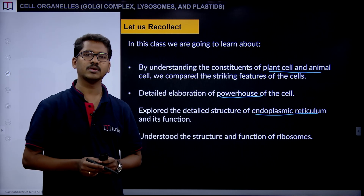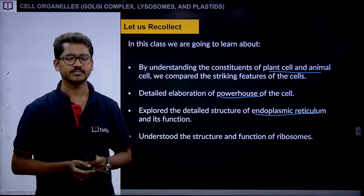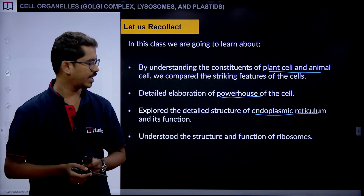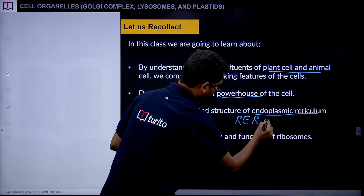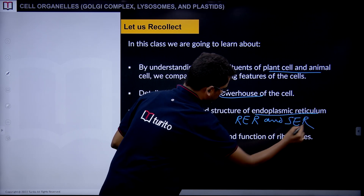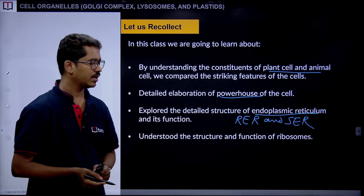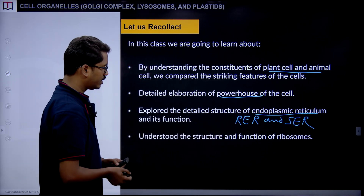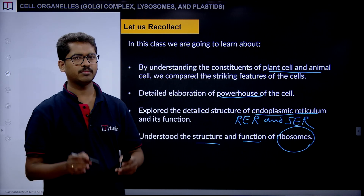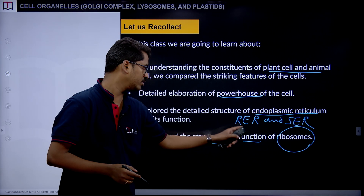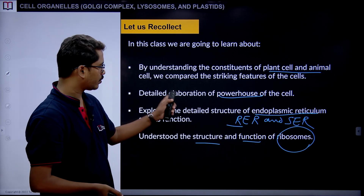We also explained the detailed structure of the endoplasmic reticulum and its function. The endoplasmic reticulum is one endomembrane system divided into two types: RER, which stands for rough endoplasmic reticulum, and SER, which stands for smooth endoplasmic reticulum. Finally, we understood the structure and function of ribosomes — the very same ribosomes that sit on the surface of RER, making it rough endoplasmic reticulum.